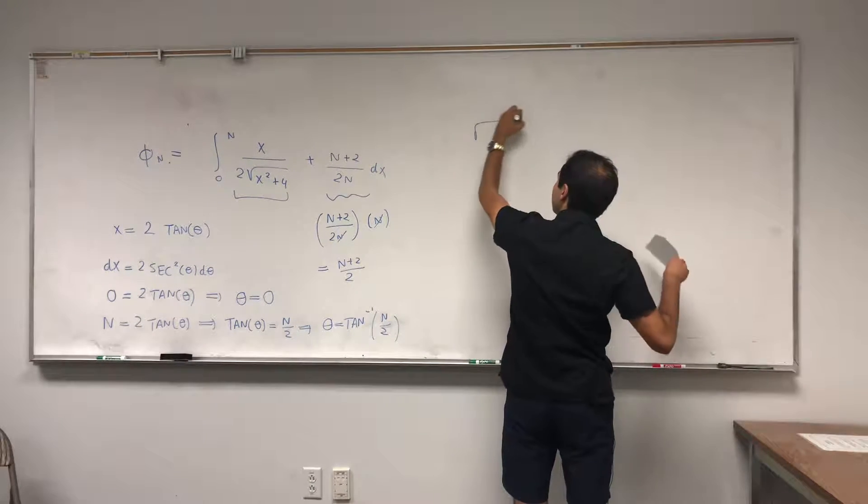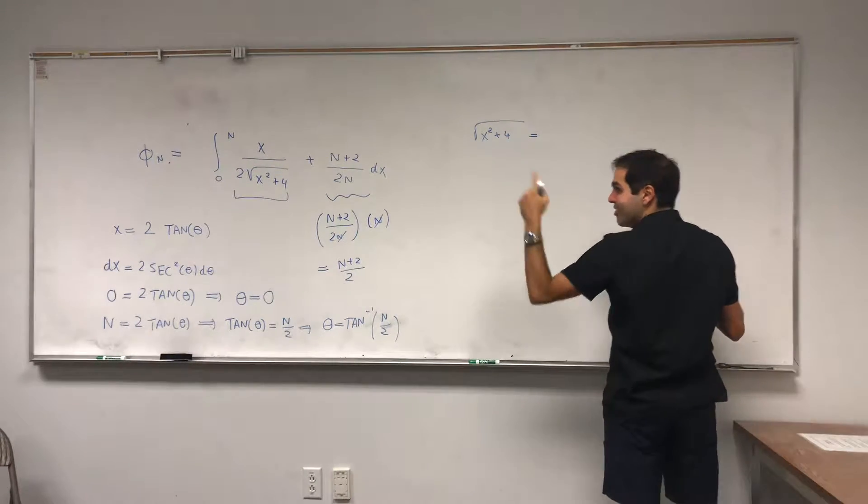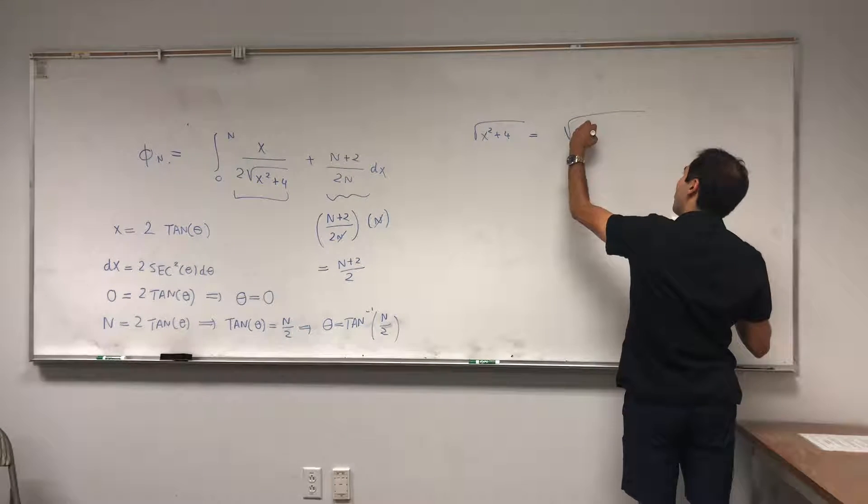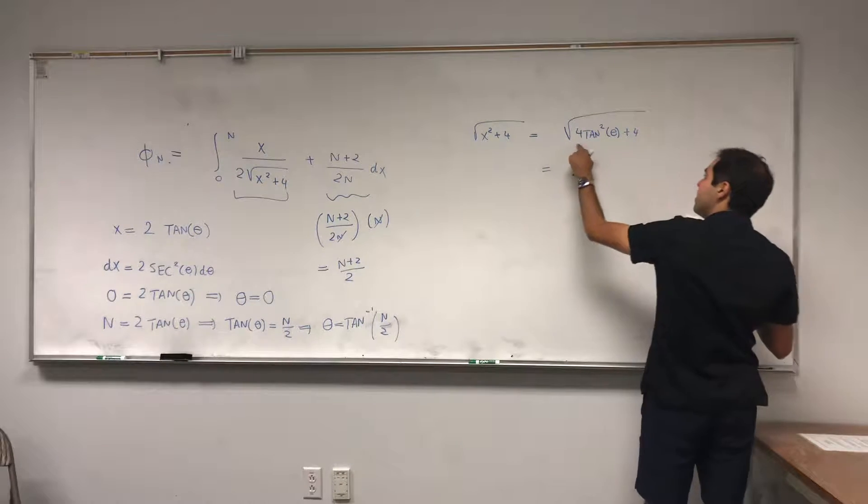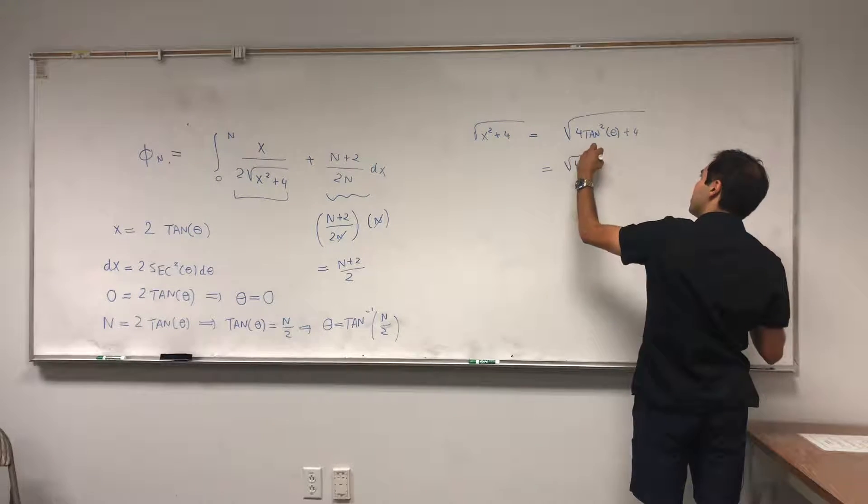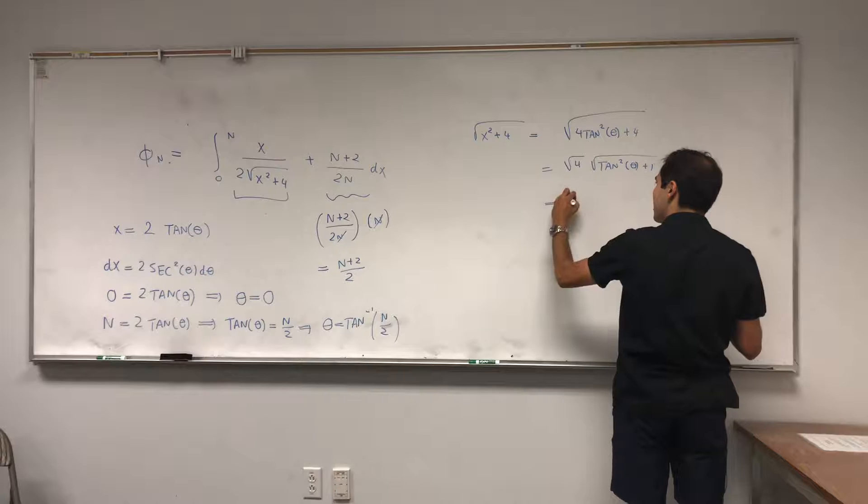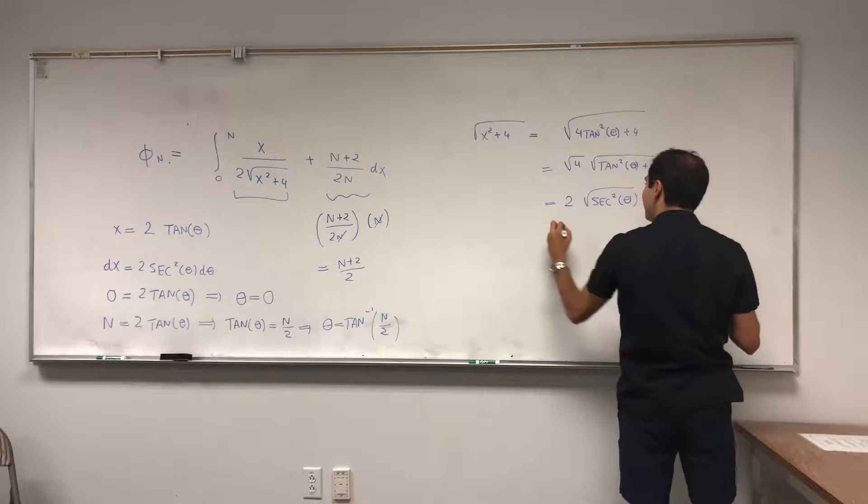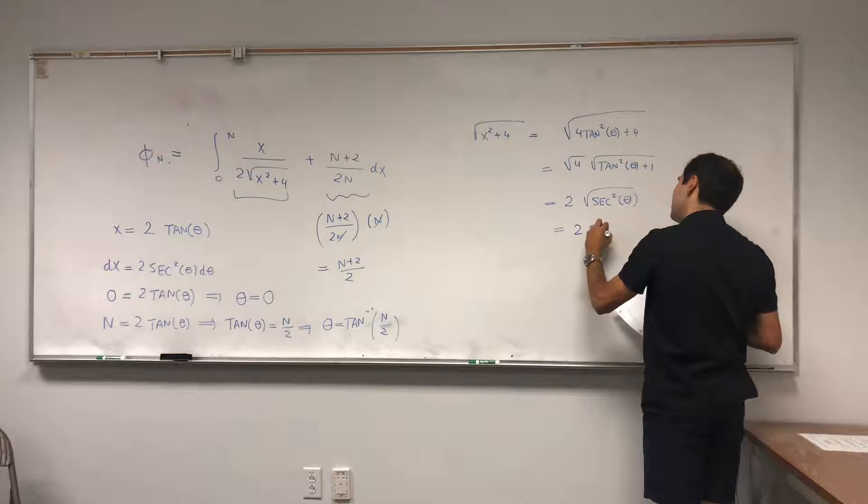And lastly what happens with this square root of x squared plus 4. The reason why we chose this substitution is simply x squared becomes 4 tangent squared of theta plus 4. This 4 factors out to get square root of 4 square root of tangent squared theta plus 1. Tangent squared plus 1 is secant squared, so 2 square root of secant squared of theta, and basically we chose this theta such that this becomes positive, so 2 secant of theta.